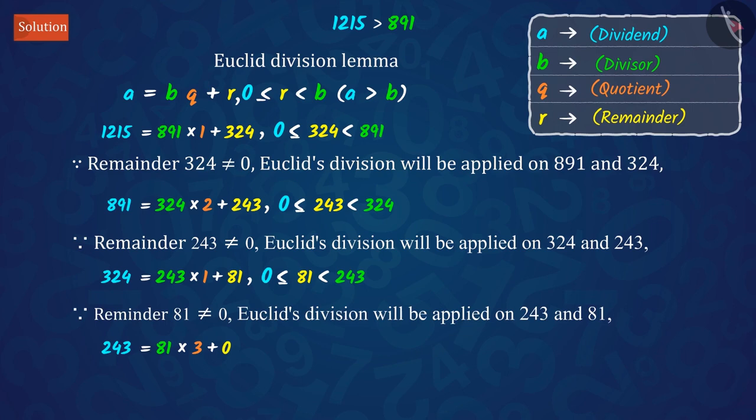The remainder has now become 0, so our procedure stops here. Since the divisor at this stage is 81, which is the HCF of 1215 and 891.